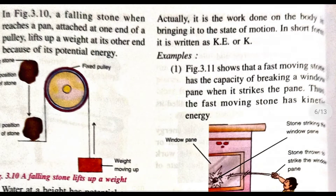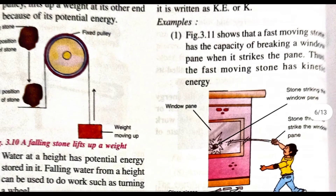It is the work done on the body bringing it to the state of motion. In short, it is called KE or kinetic energy. Figure 3.11 shows that a fast-moving stone has the capacity of breaking a window pane when it strikes the pane. The fast-moving stone has kinetic energy. When the stone is fixed or at rest, the kinetic energy will be zero.